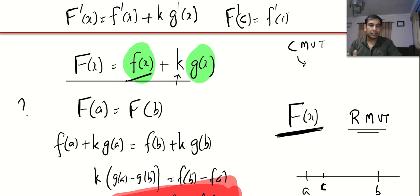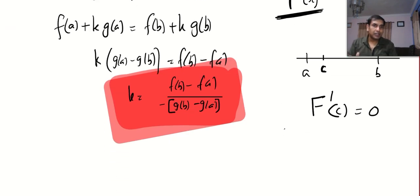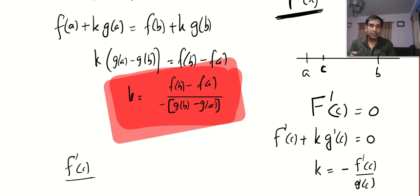That will be f dash of c plus k times g dash of c is equal to 0. So k is equal to minus f dash of c by g dash of c. Manipulating a little bit, f dash of c by g dash of c is equal to minus k and you know the k value. That's it.